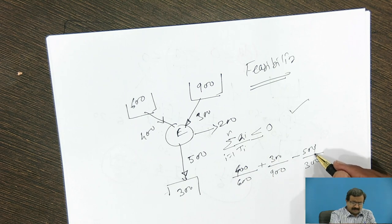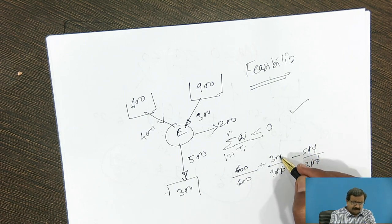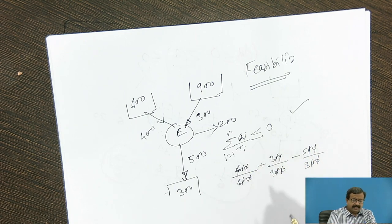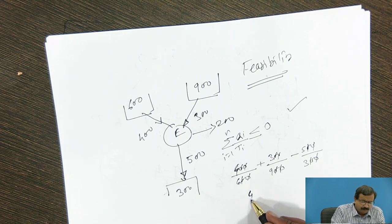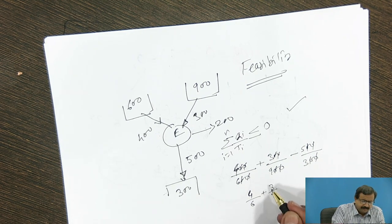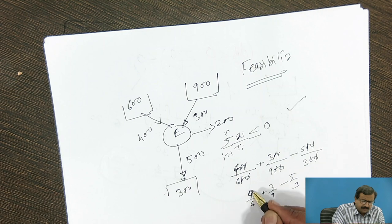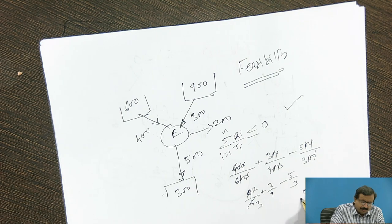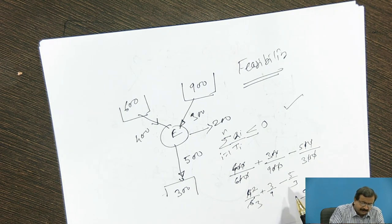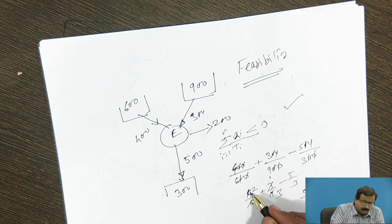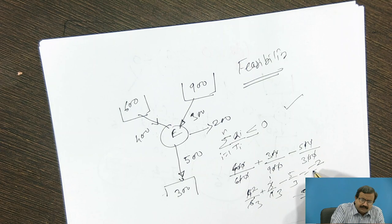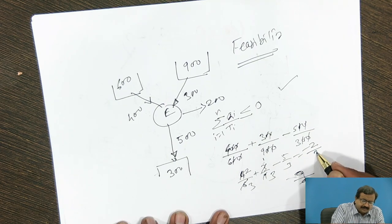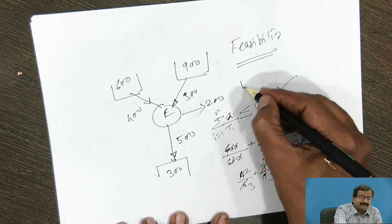Now I will see the exact things what is happening here in this situation. So I will get 4 by 6 plus 3 by 9 minus 5 by 3. So I will get this 3 plus 2, 5. This is 3. So 2 plus 3, 3 minus 5 is minus 2. So minus 2 by 3. So luckily, this is working.